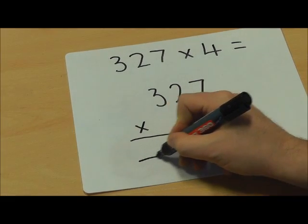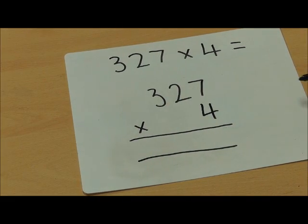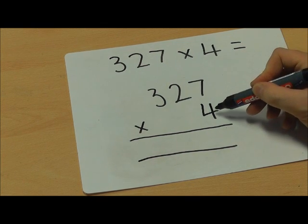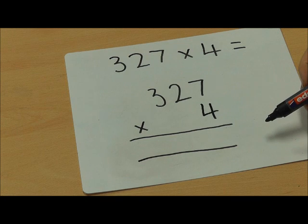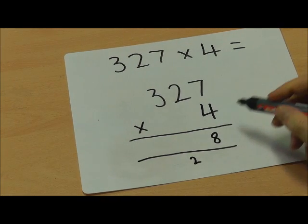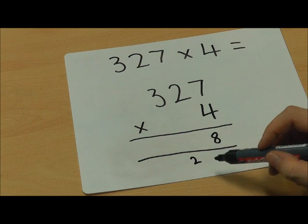I'm now going to work out the answer to the calculation. I always start with the lowest value digit, so I'm going to do 7 multiplied by 4, which equals 28. So I'm going to record 28 like that, as we have done in the past with addition and subtraction questions.